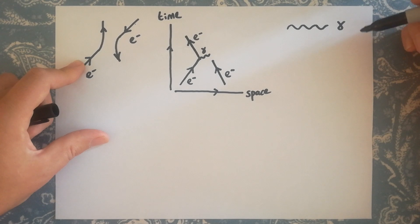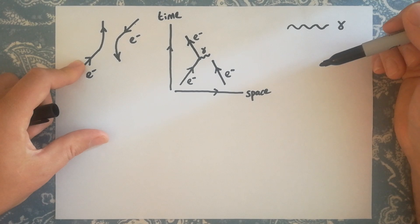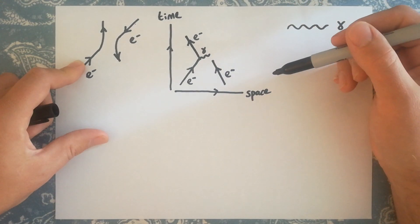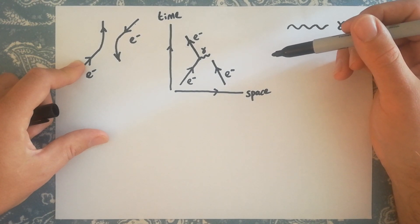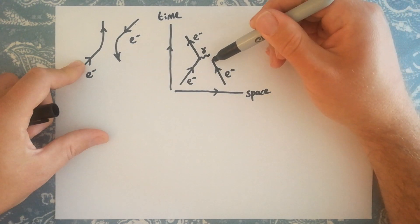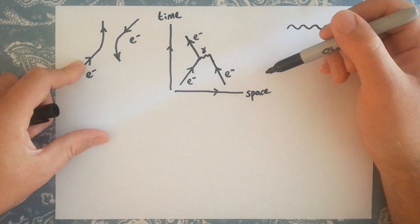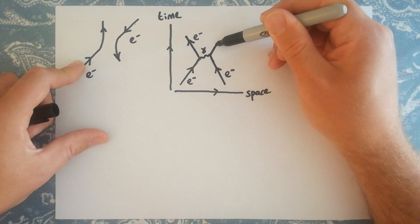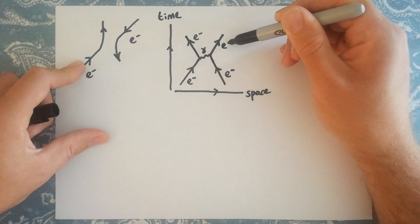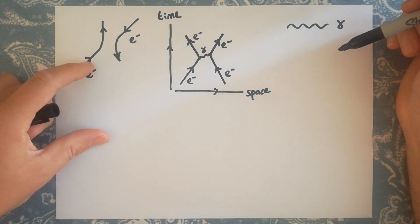For a virtual photon we use a wobbly line. Later on we'll look at the different lines used for, for example, W bosons that carry the weak force. We draw the virtual photon line on a slant - not horizontal - because it's traveling at the speed of light which is a finite speed. A horizontal line on a Feynman diagram would suggest something traveling at infinite speed. A short time after it's emitted, that virtual photon is absorbed by the second electron, causing it to change its velocity and momentum. That's one possible Feynman diagram representing electron scattering.